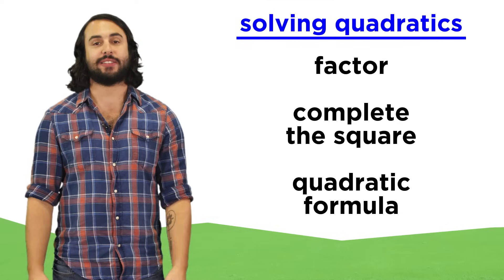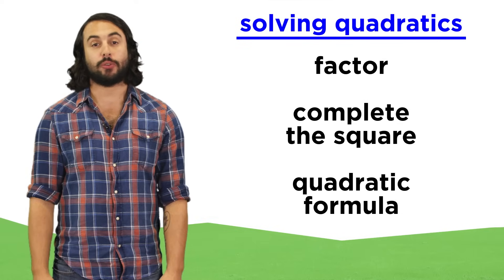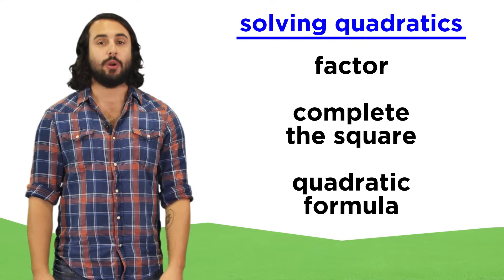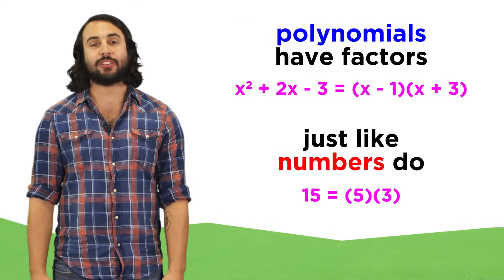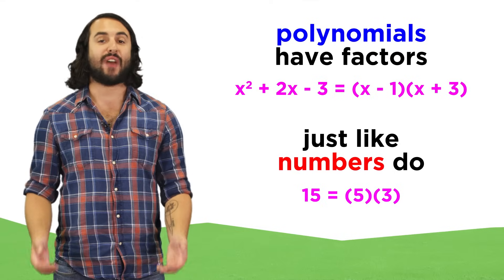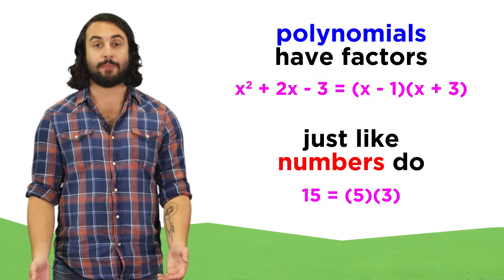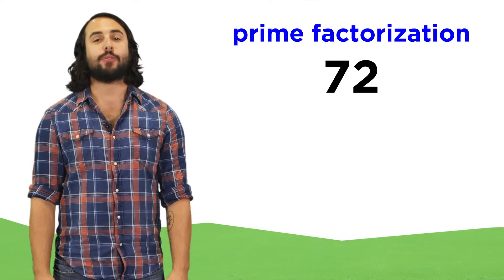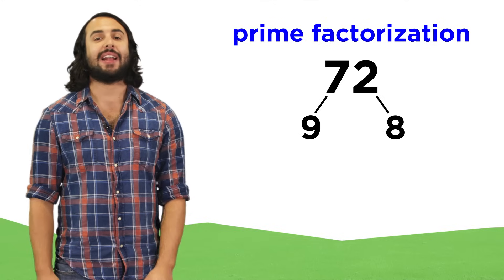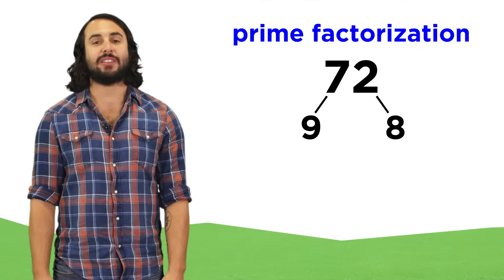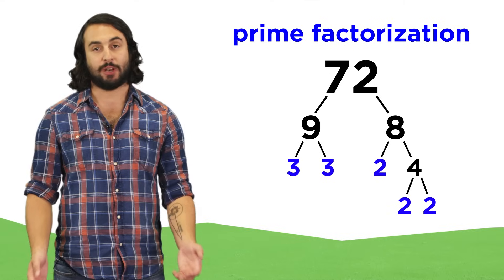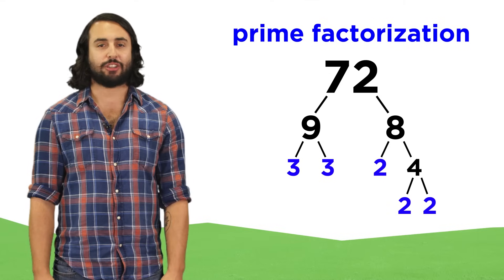We just learned a couple techniques that we can use to solve polynomials, and in doing so we learned that we can find the factors of polynomials just like we can find the factors of numbers. When we do prime factorization, we take some number and split it up into factors until we are left with only prime numbers. That begs the question: